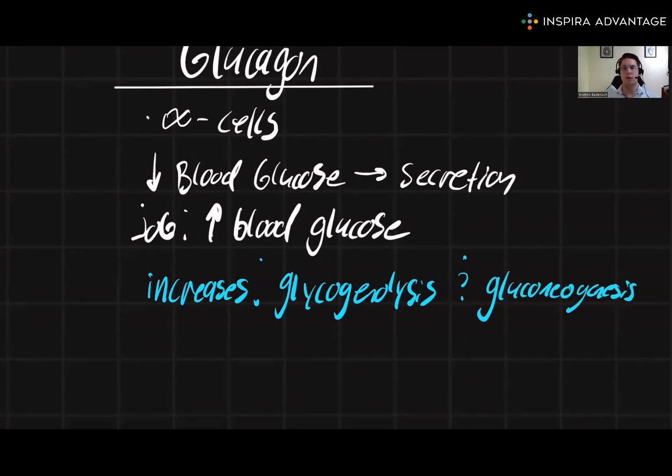This makes sense because if we are low on glucose, we're going to want to break down the stored glucose, aka glycogen, and create new glucose from other sources like fats through gluconeogenesis.